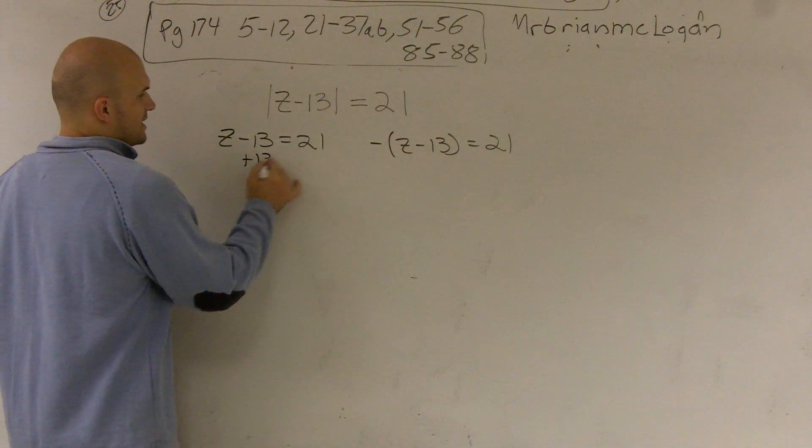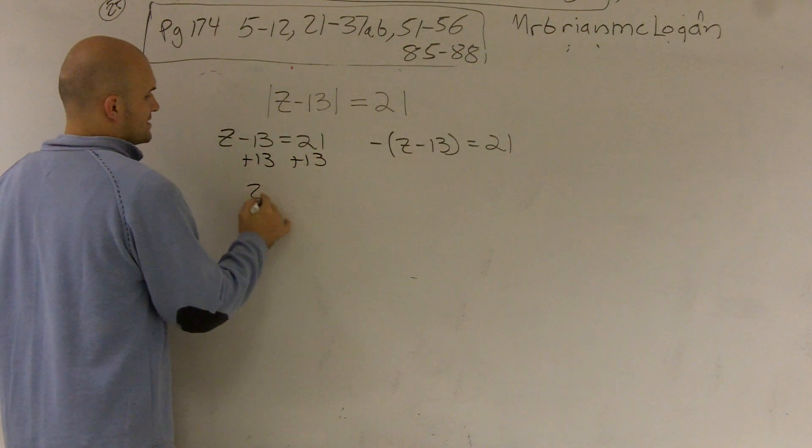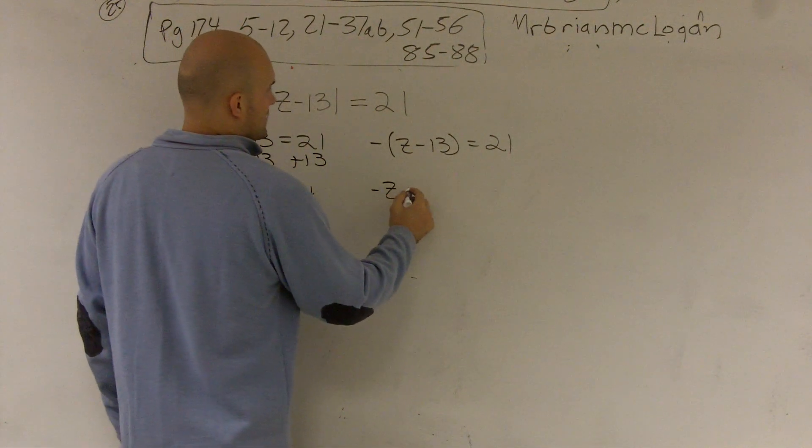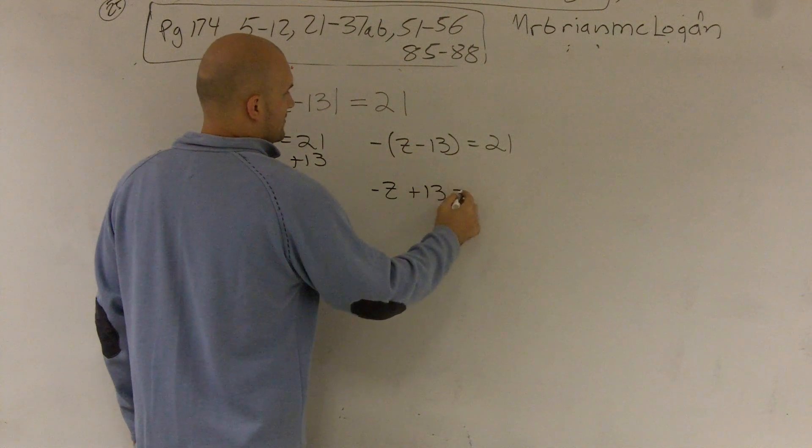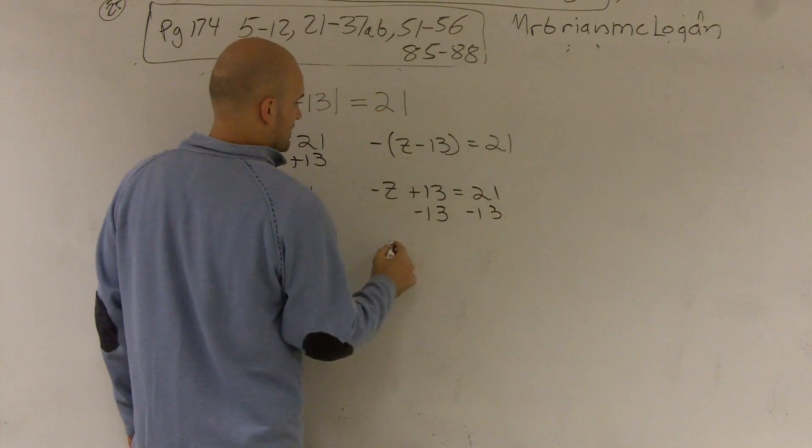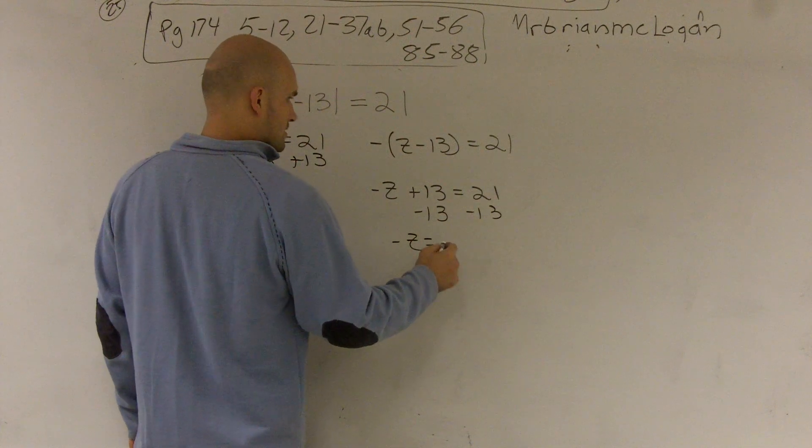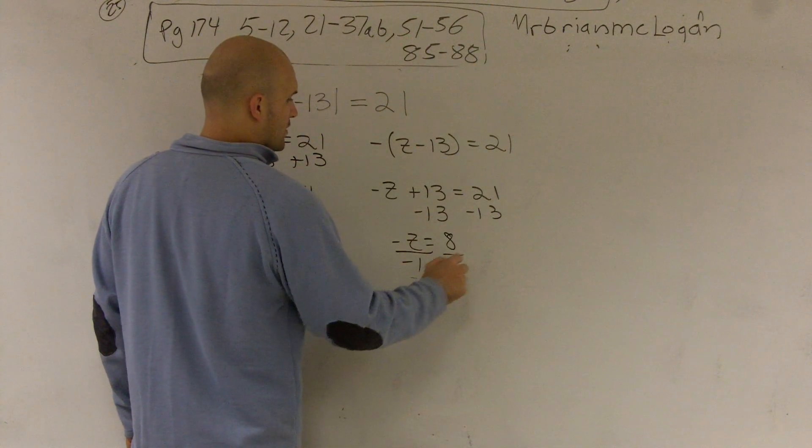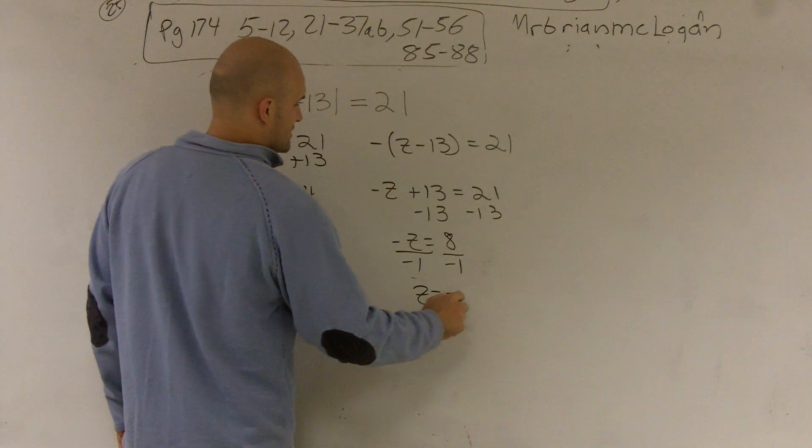So here I'll just add 13 and I get z equals 24. And over here, I get negative z plus 13 equals 21. Subtract 13, I get negative z equals positive 8. Divide by negative 1, z equals negative 8.